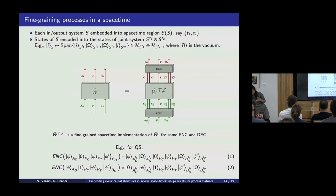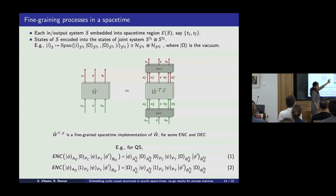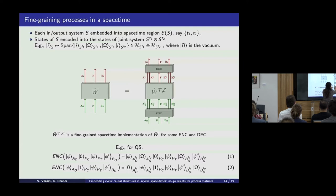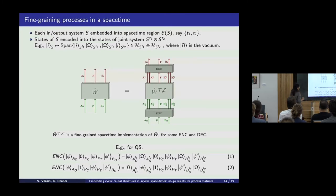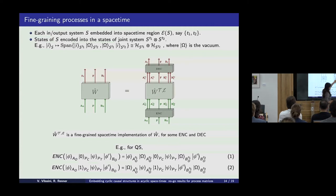This corresponds to the idea of fine-graining. What we're doing when we take a process and implement it in a spacetime is taking each system and encoding the information into a set of systems. Which set of systems we encode into depends on the spacetime embedding. So, say, the output AO is associated with the spacetime region consisting of two points T1 and T2 — we're encoding the state of this output into some joint space of these two things. This is what we regard as a spacetime implementation of the process, and it corresponds to a fine-graining giving a finer level of detail in terms of individual subsystems.